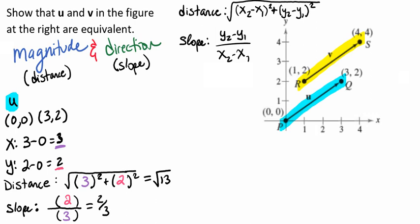Here we see that we have our magnitude of u and our direction of u. Now we want to look at our vector v and do the same thing. Remember that v has starting points at r of (1, 2) and ending points at s at (4, 4). Let's go ahead and find our change in y and x there.